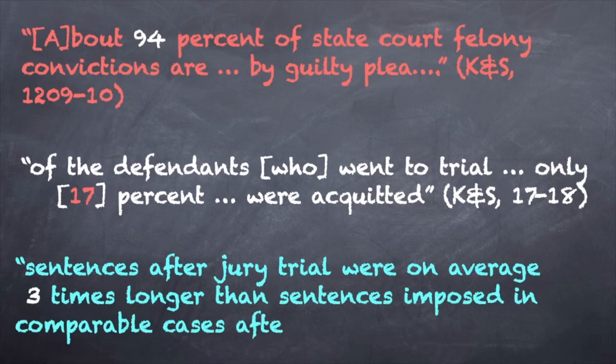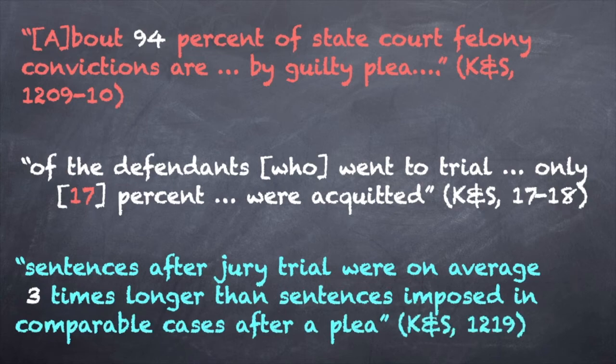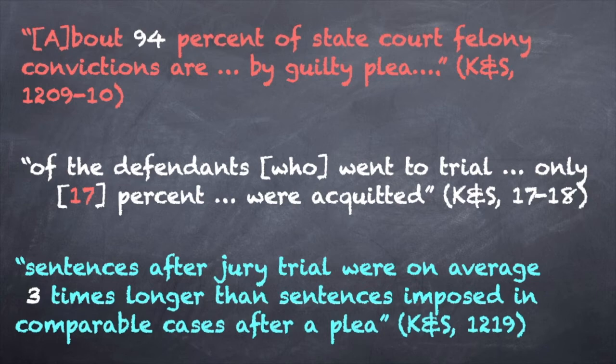Sentences after jury trial were on average three times longer than sentences imposed in comparable cases after a plea. Suppose you are arrested and charged with a serious crime — an armed robbery. You know you are innocent, but there is an eyewitness that has identified you as the perpetrator. You have no alibi, you cannot afford a lawyer — only one in five felony defendants can — and you cannot afford bail, so you are in jail awaiting trial.